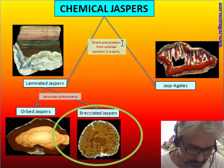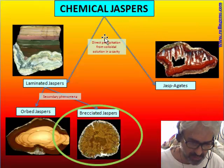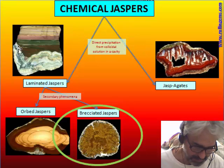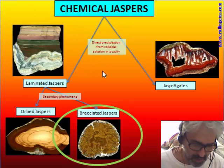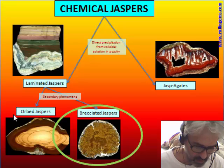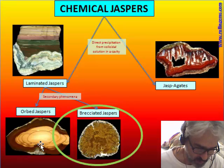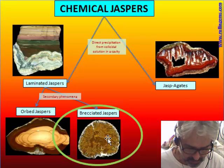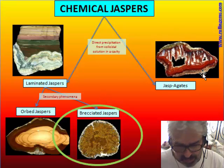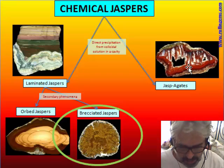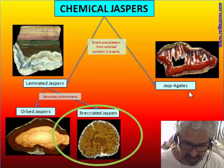The chemical jasper can be subdivided into a few groups. The more important is the laminated jasper, that is the generic group. We also make two secondary groups based on secondary phenomena: the formation of orbs and the formation of breccia. Another group is jasper-gate, that is a transition group between jasper and agate.